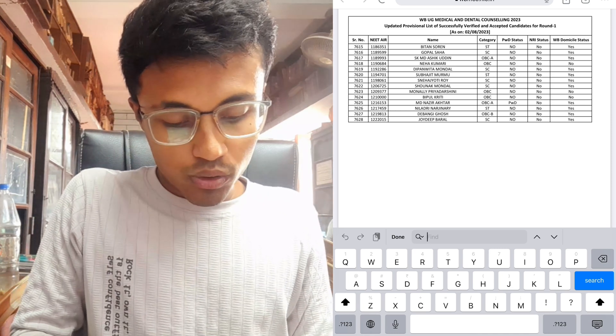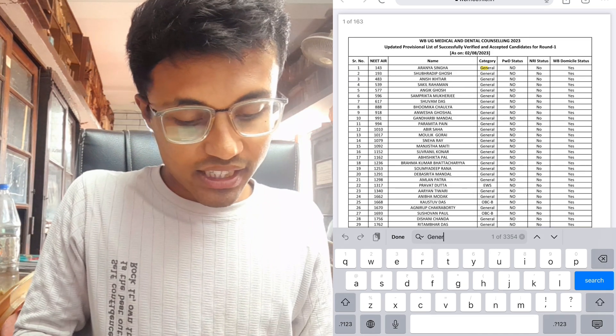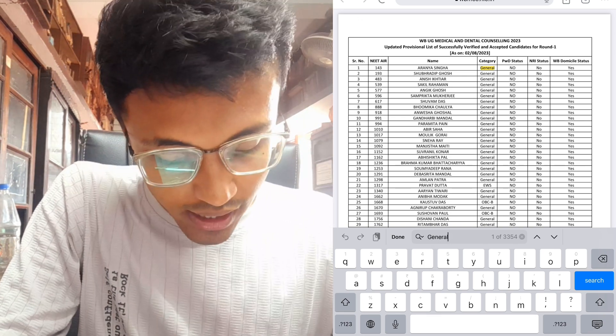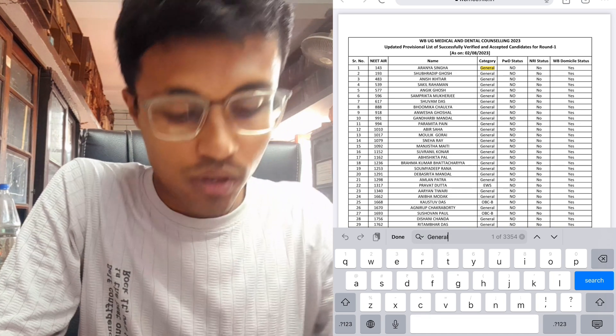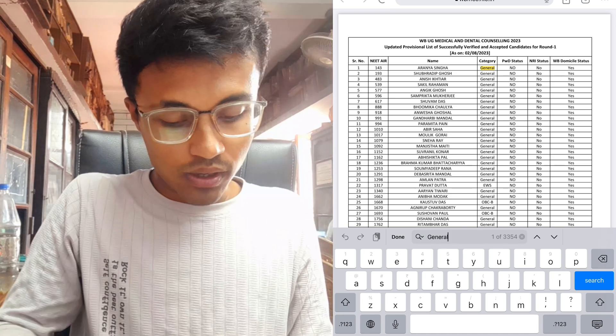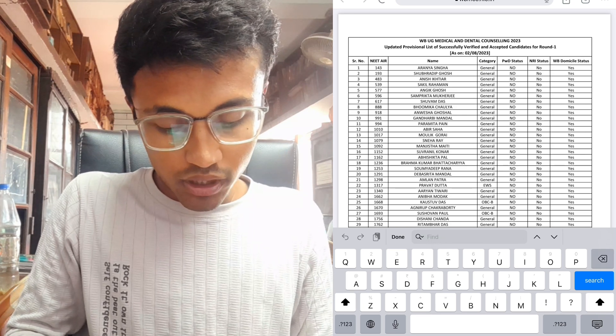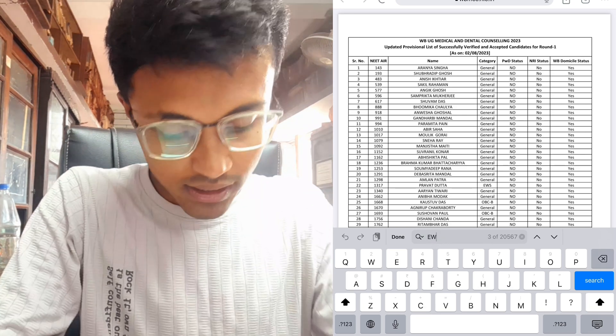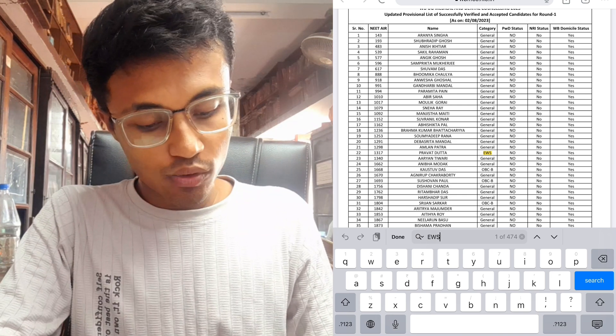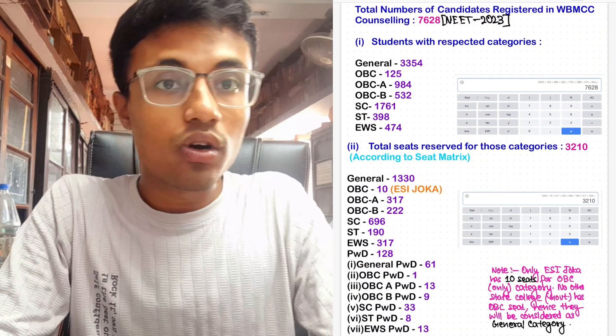So as you can see, the total number of students is 7,628. Now you guys want to know how do I get the general and the data for the respected categories. If I search general, the total number of searches are 3,354. So that means the total number of general candidates are 3,354. Similarly, when I search for another category such as EWS, the total number of candidates which are EWS is 474. So this is how I got my data.